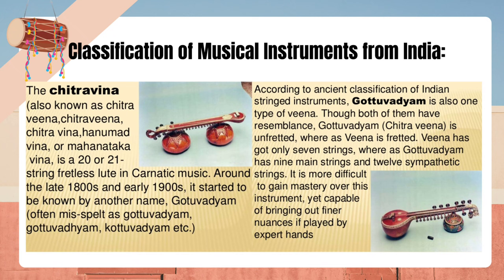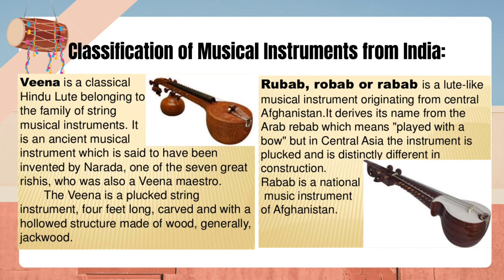Veena has only seven strings whereas Gautavadyam has nine main strings and twelve sympathetic strings. It is more difficult to gain mastery over this instrument, yet capable of bringing out finer nuances if played by expert hands. Veena is a classical Hindu lute belonging to the family of string musical instruments — an ancient instrument said to have been invented by Narada, one of the seven great rishis, who was also a Veena maestro. The Veena is a plucked string instrument, four feet long, carved with a hollowed structure made of wood, generally jackwood. Rubab (also Robab or Rebob) is a lute-like musical instrument originating from central Afghanistan, deriving its name from the Arab rebob meaning played with a bow, but in central Asia the instrument is plucked. Rabab is a national music instrument of Afghanistan.